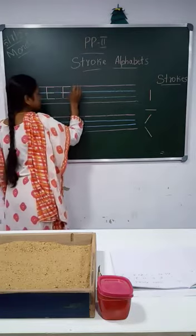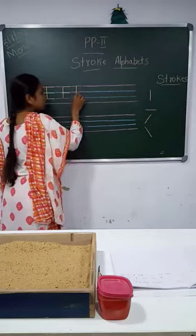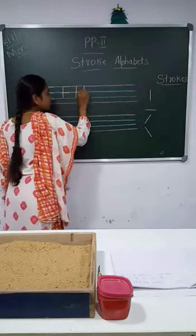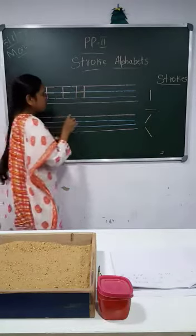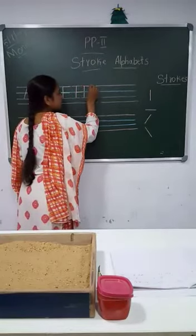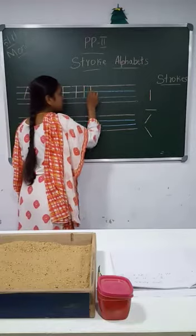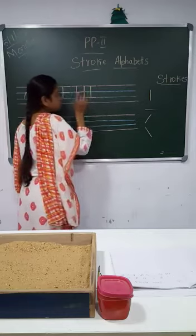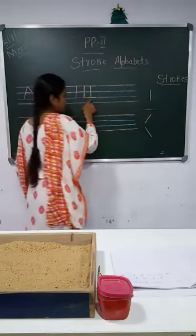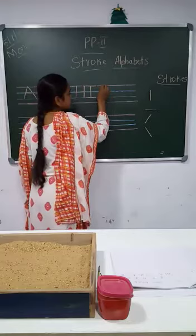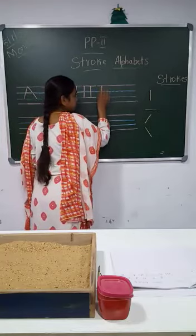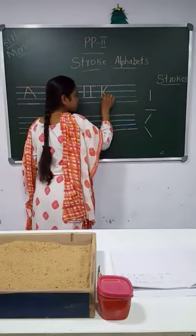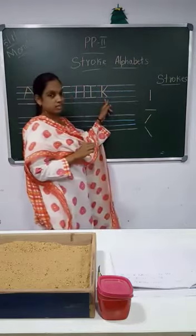Letter H: standing line, one more standing line, then a sleeping line in the middle — letter H. Then letter K: standing line, left slanting line, then right slanting line — letter K.